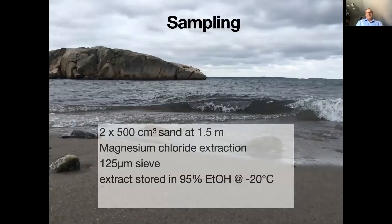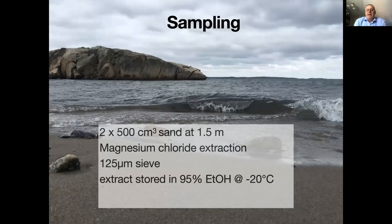The sampling was done — we took two, or in some cases three, samples of 500 cubic centimeters of sand at 1.5 meters depth. We brought these back to the lab and made magnesium chloride extraction according to a standardized protocol. Then we used a sieve to capture everything suspended from the magnesium chloride extraction, and the sieve contents were stored in 95% ethanol at minus 20°C until DNA was extracted and PCR was performed.